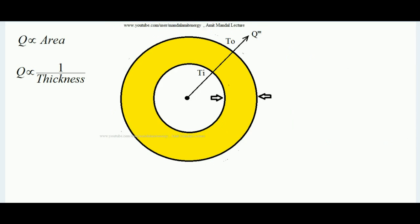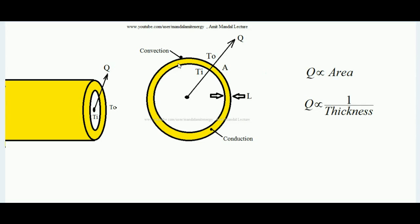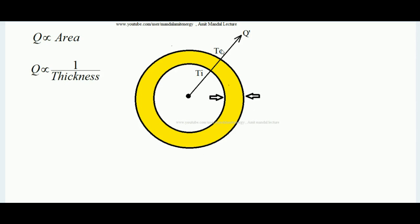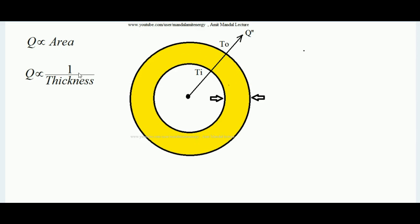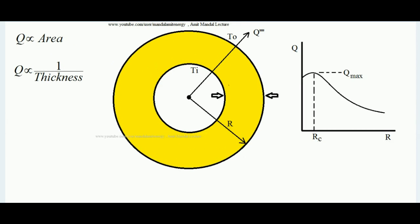To summarize: heat is ultimately transferred from the outer peripheral surface of the cylinder to the environment, so greater the outer peripheral surface area, greater the heat transfer rate. On the other hand, increasing the thickness of insulation adds resistance, reducing the heat transfer rate. As insulation radius increases, both area of exposure and thickness increase simultaneously — and up to a particular radius, the heat transfer rate increment due to increasing area prevails over the decrement due to increasing thickness.